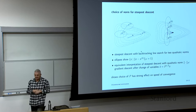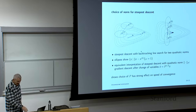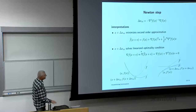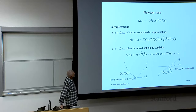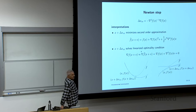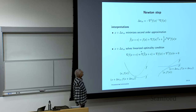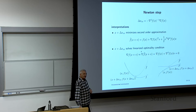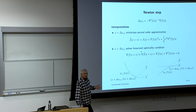These are ideas that capture the essence of where we're going. If you keep going with this logic, you end up at something called the Newton step. The Newton step uses the Hessian — the second derivative of the function at the current point — as your metric.